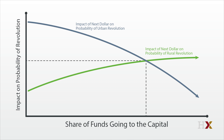The result of this little calculation is that the smart dictator targets his money toward the capital, where he can keep his near neighbors satisfied and less likely to rise up against him.